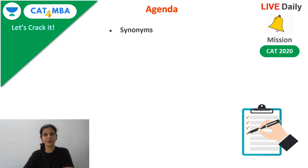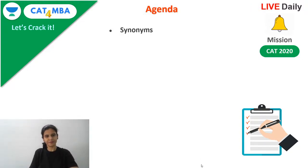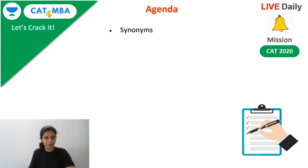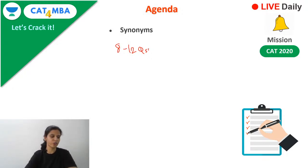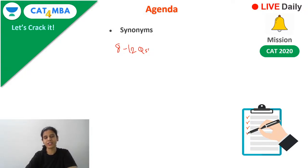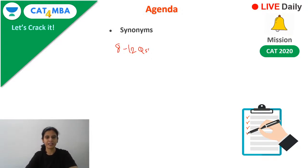In this session we are going to talk about synonyms. In the vocabulary section of exams like SNAP, MAT, IIFT, and CET, there are around 8 to 12 questions based on vocabulary, out of which you can expect around 4 to 5 questions based on synonyms. We are going to solve about 30 questions based on synonyms, learn a lot of new words, and I'll also share some quick and easy tips to remember those words.